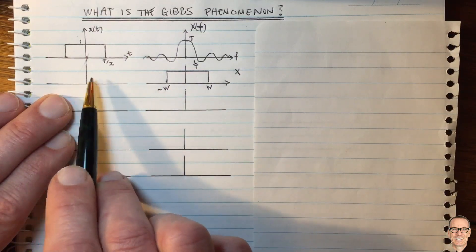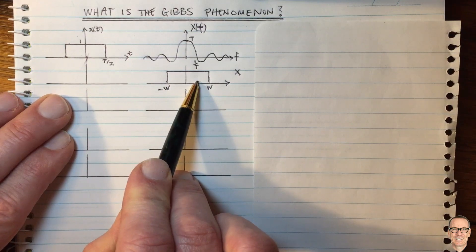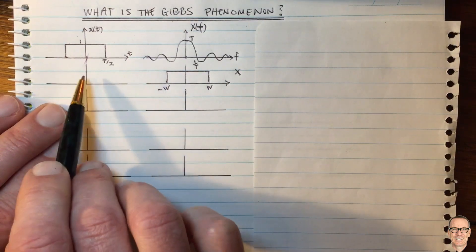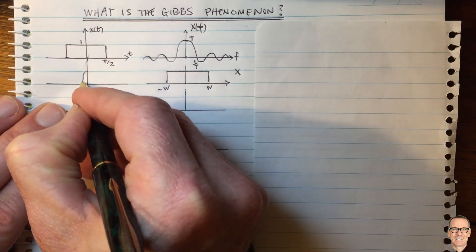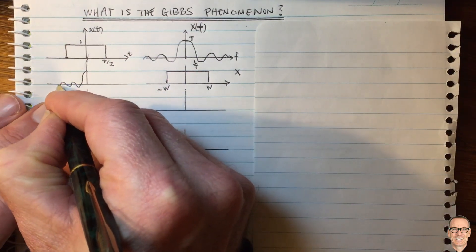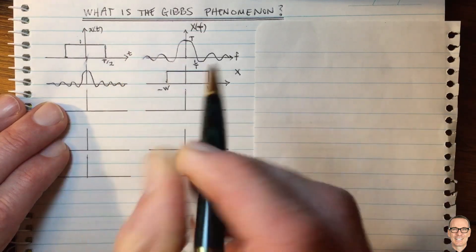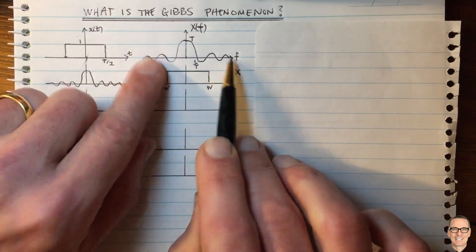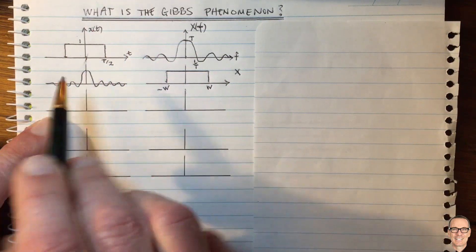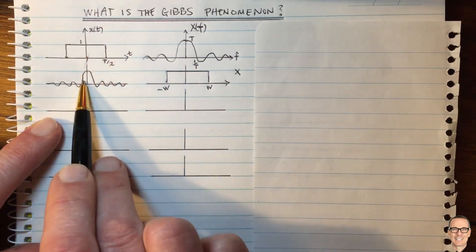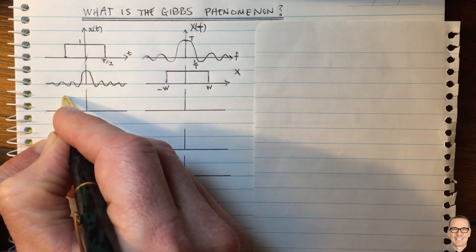Let's look at what that gives us. This square function in the frequency domain, because of duality, has a time domain which is a sinc function. So we get a sinc function in the time domain from this filter, which is filtering out the high frequency components. When we get the convolution in the time domain, we're going to get a convolution of the square with the sinc.